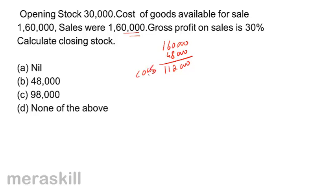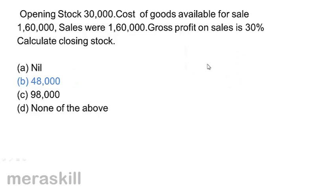The cost of goods available for sale was 1,60,000. Goods available for sale includes the closing stock, but cost of goods sold is only 1,12,000. Therefore, closing stock must be 1,60,000 minus 1,12,000, equal to 48,000. Correct answer B, 48,000. The cost of goods available for sale is opening stock plus purchases; the balance remaining after sales is closing stock. Cost of goods sold does not include closing stock.